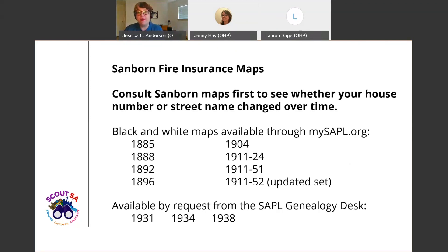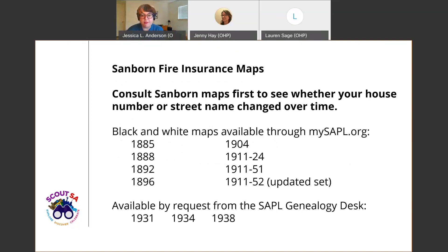My first step in researching an address is always looking for it on a Sanborn fire insurance map. These maps are detailed maps made so that fire insurance companies could assess their total liability in cities, and they provide a ton of great information about properties in San Antonio that were built prior to the mid-1950s. The years available online for San Antonio range from 1885 through 1952.